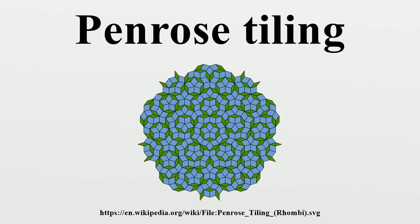Penrose and John H. Conway investigated the properties of Penrose tilings, and discovered that a substitution property explained their hierarchical nature. Their findings were publicized by Martin Gardner in his January 1977 Mathematical Games column in Scientific American. In 1981, de Bruijn explained a method to construct Penrose tilings from five families of parallel lines, as well as a cut and project method, in which Penrose tilings are obtained as two-dimensional projections from a five-dimensional cubic structure.